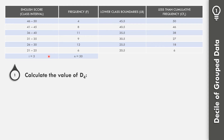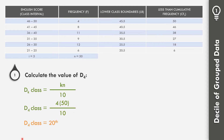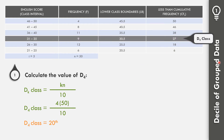To calculate D4, first identify the D4 class using k×N/10 = 4×50/10 = 20. The value 20 falls between cumulative frequencies 18 and 27, so the D4 class is the interval 31 to 35.